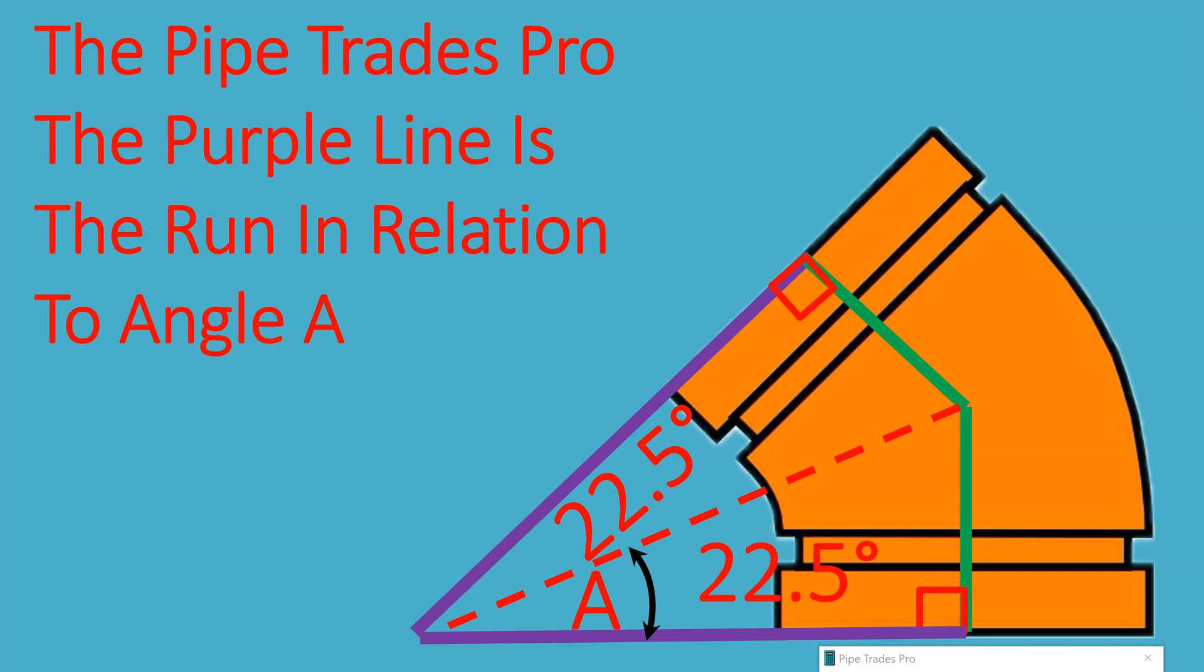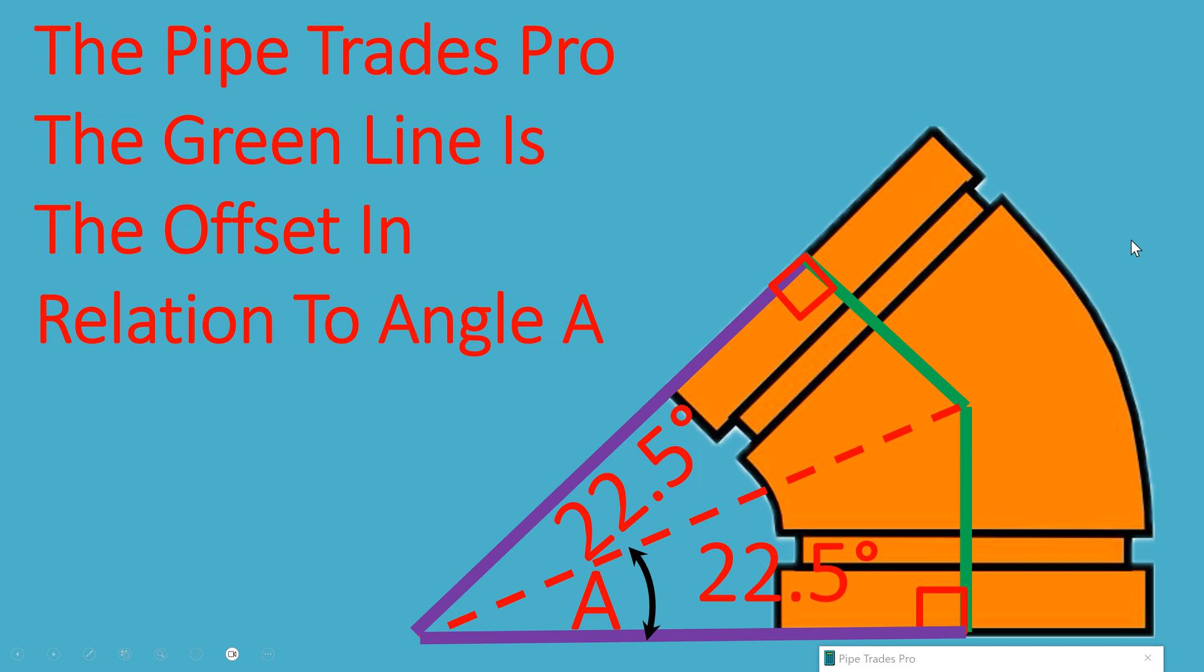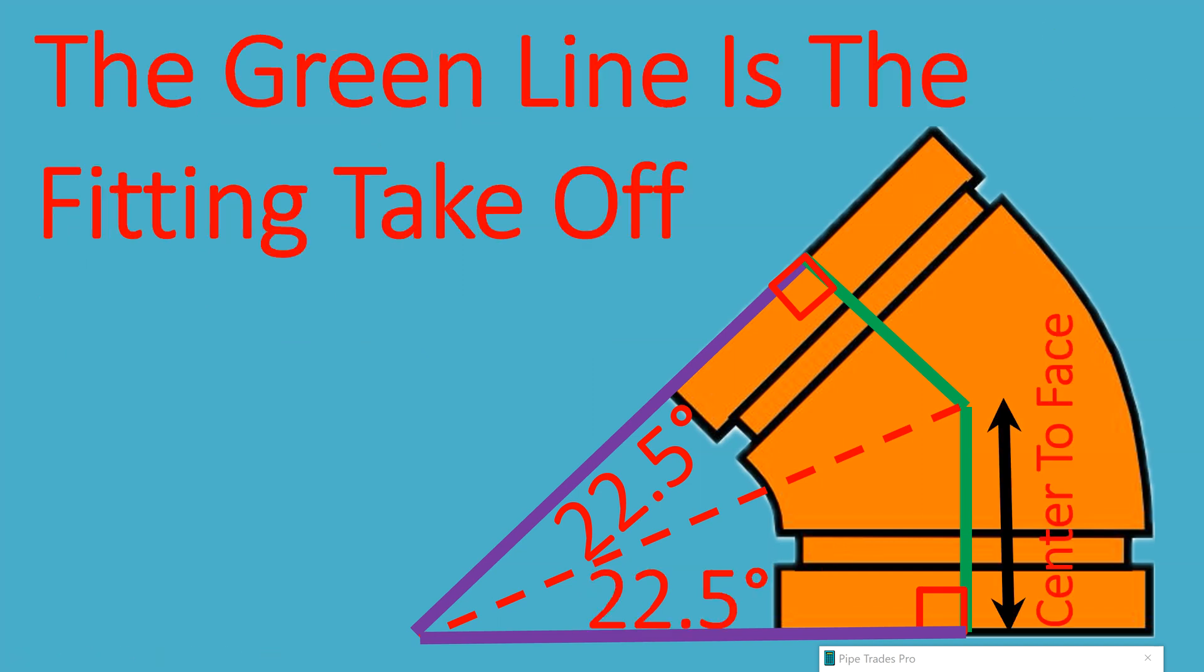In the Pipe Trades Pro, the purple line is the run in relation to angle A. You can see down here angle A. Okay, the purple line is the run in relation to angle A. With the Pipe Trades Pro, the green line is the offset in relation to angle A. The green line is the offset. The green line is the fitting takeoff, or what we call the center to face. So you see some different words used for the same line. It's all the same thing: center to face, takeoff, offset.